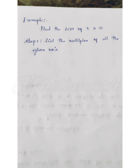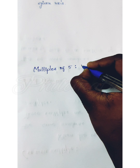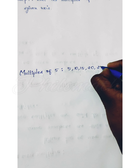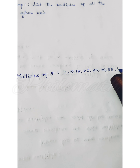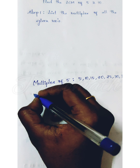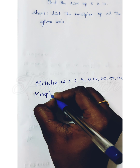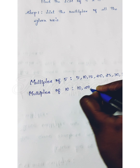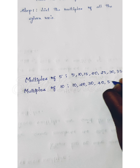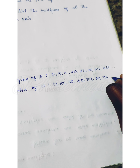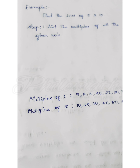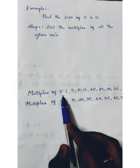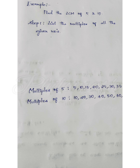The multiples of 5 are: 5, 10, 15, 20, 25, 30, 35, 40, and so on. Similarly, we find the multiples of 10: 10, 20, 30, 40, and so on. So step one is to list out the multiples of the given numbers — 5 and 10.